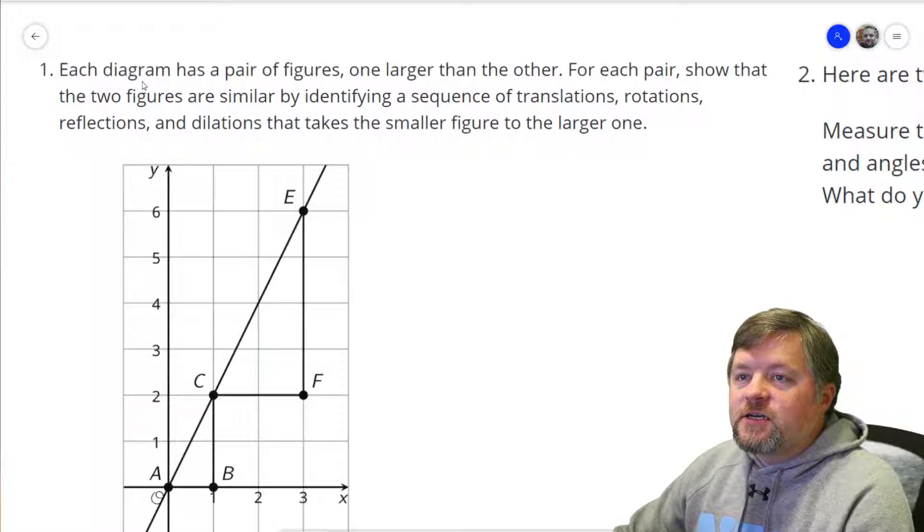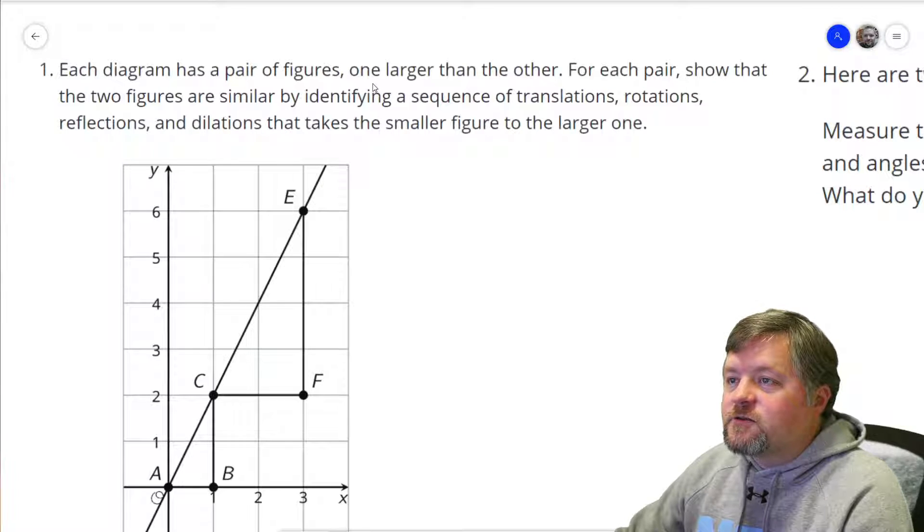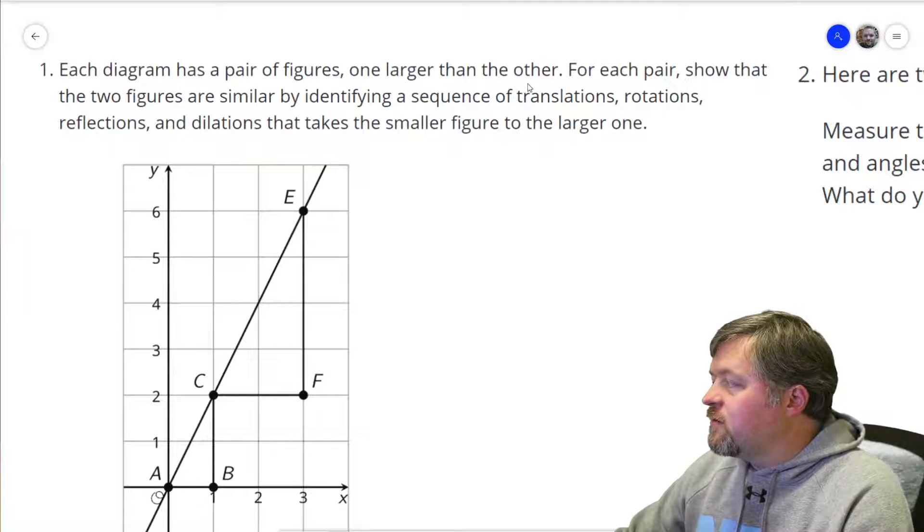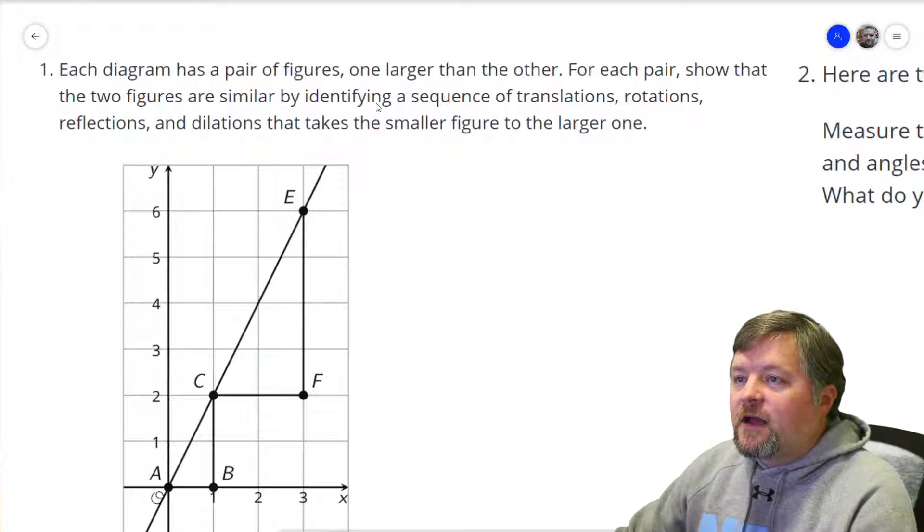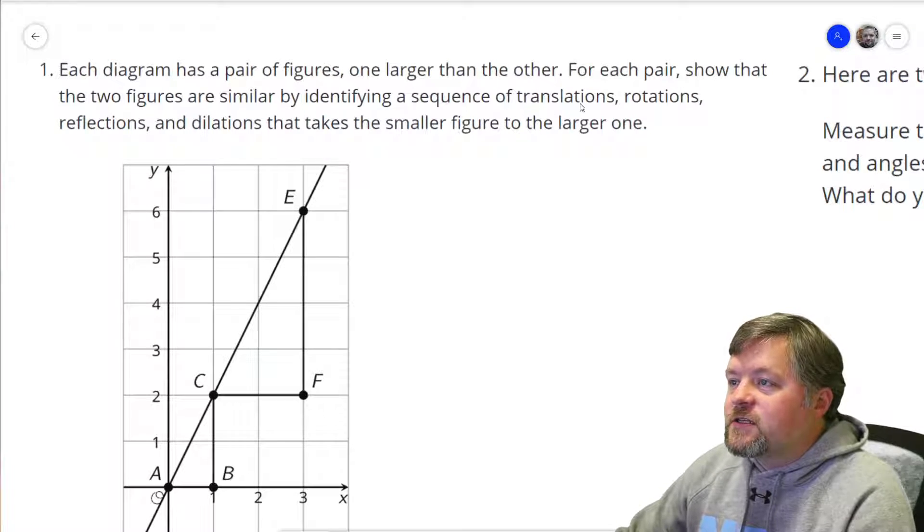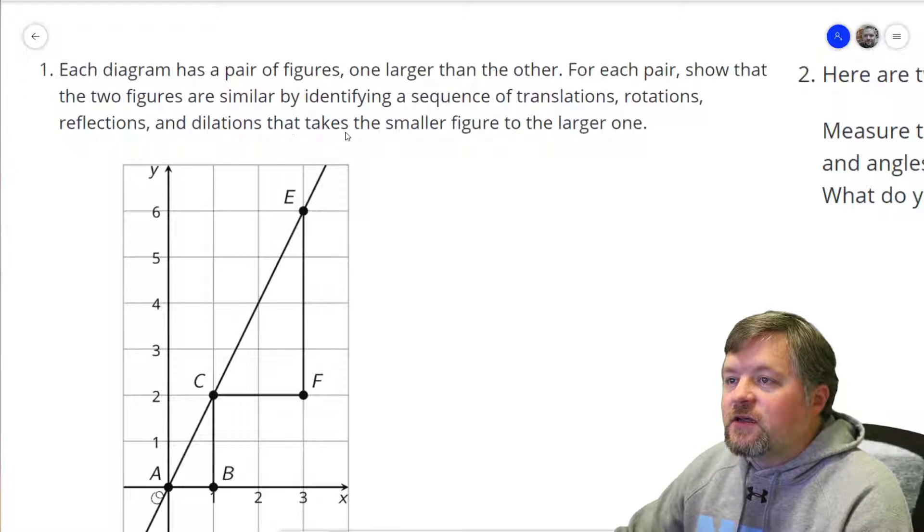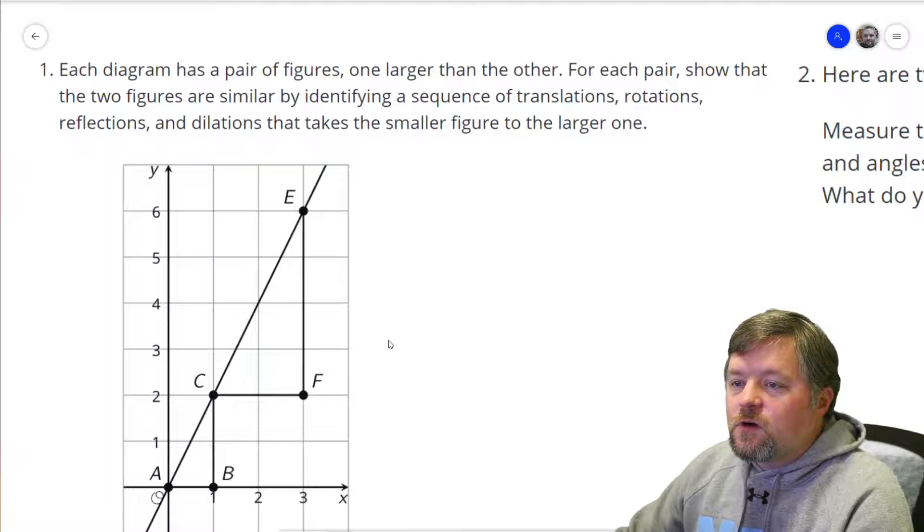Our first problem here says each diagram has a pair of figures, one larger than the other. For each pair, show that the two figures are similar by identifying a sequence of translations, rotations, reflections, and dilations that takes the smaller figure to the larger one.